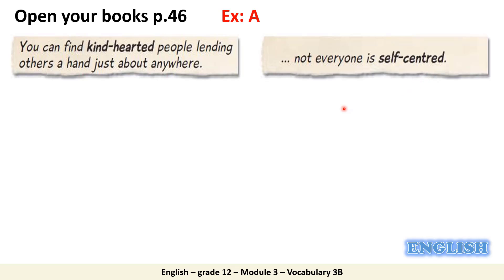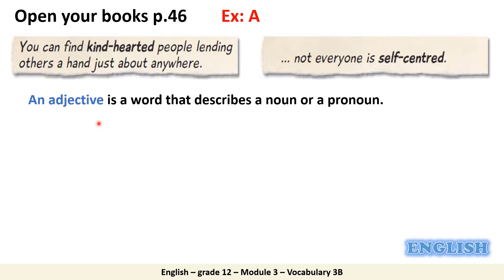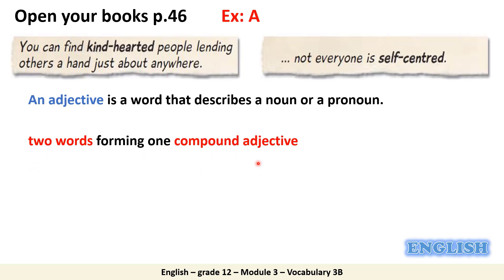Can you tell me what an adjective is? An adjective is a word that describes a noun or a pronoun. So one word — how come in here we have kind-hearted, which is made up of two words? It is still an adjective, but it is called a compound adjective. So two words forming one adjective — this is called a compound adjective.